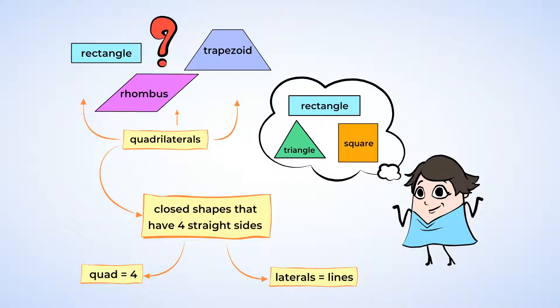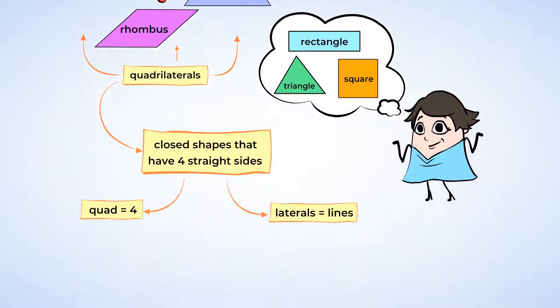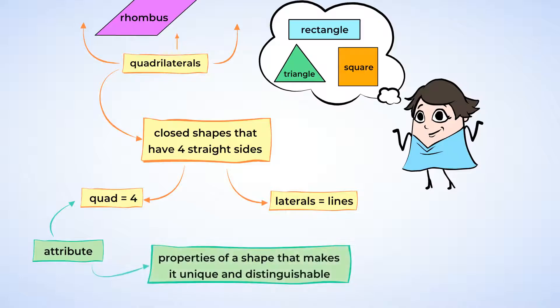The fact that a shape has four sides is called an attribute. Attributes are the properties, or what defines a shape, and makes it unique and distinguishable. Let's look at different ways we can identify specific quadrilaterals by their attributes.